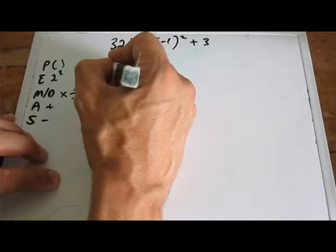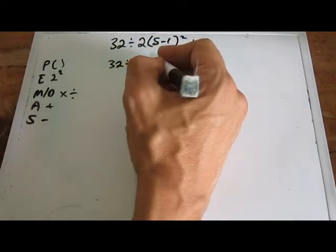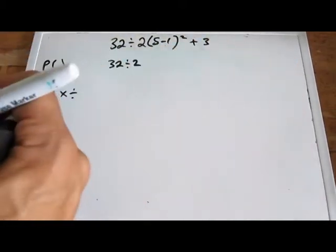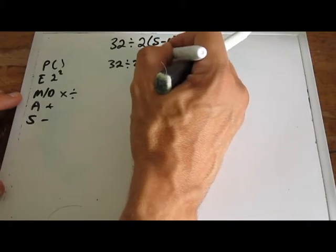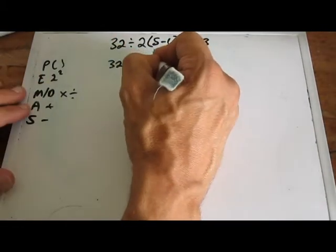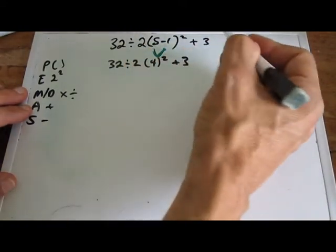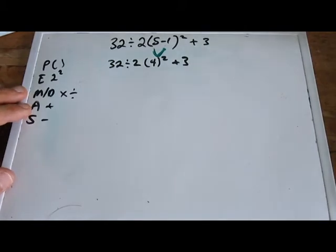32 divided by 2, and then inside we've got 5 minus 1. So we're going to put a little check here to indicate that what we've done is we've changed that 5 minus 1 to a 4 squared plus 3, right? That's our first step.